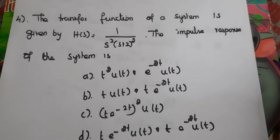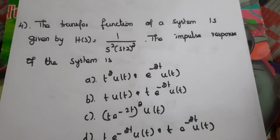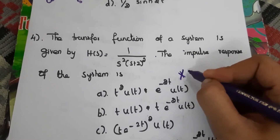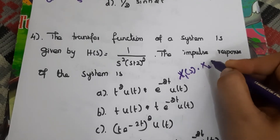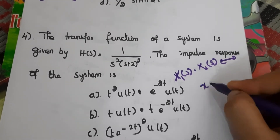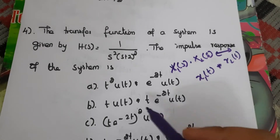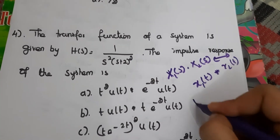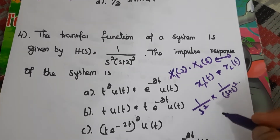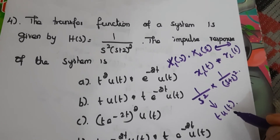Fourth question: the transfer function of a system is H(s) = 1/[s²·(s+2)²]. Find the impulse response. The key property here is that multiplication in the Laplace (s) domain corresponds to convolution in the time domain. We write this as [1/s²]·[1/(s+2)²]. The inverse Laplace of 1/s² is t·u(t).